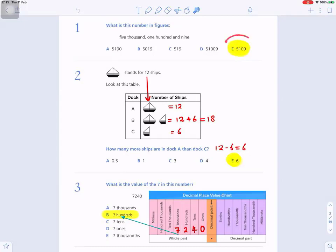5,109. So, your answer is E, 5,109. This first one, A, is 5,190. The second one, B, is 50,190. The third one, C, is 5,190. And the fourth one, D, is 51,009. So 5,109 is E.